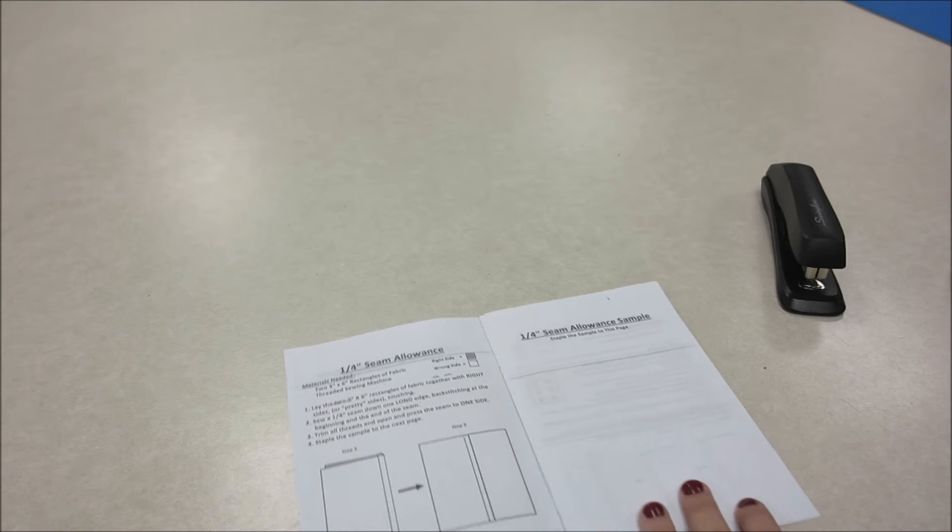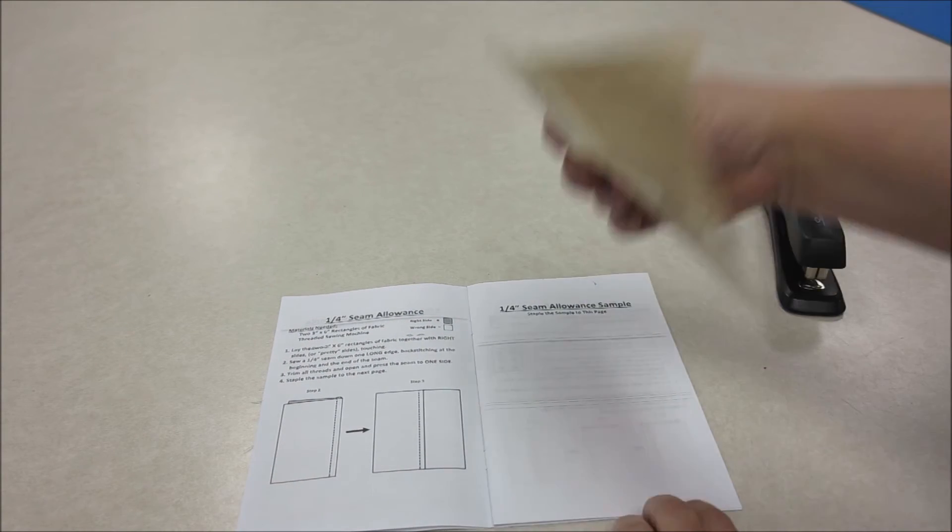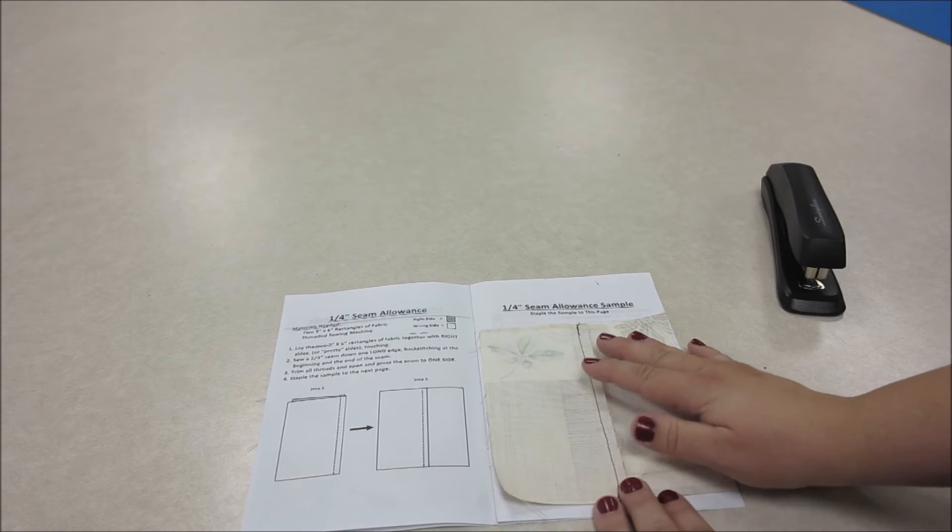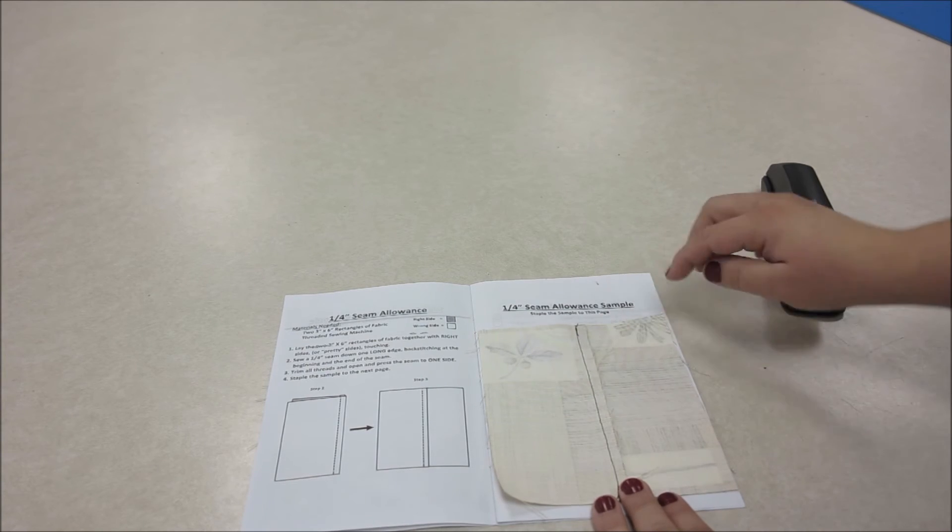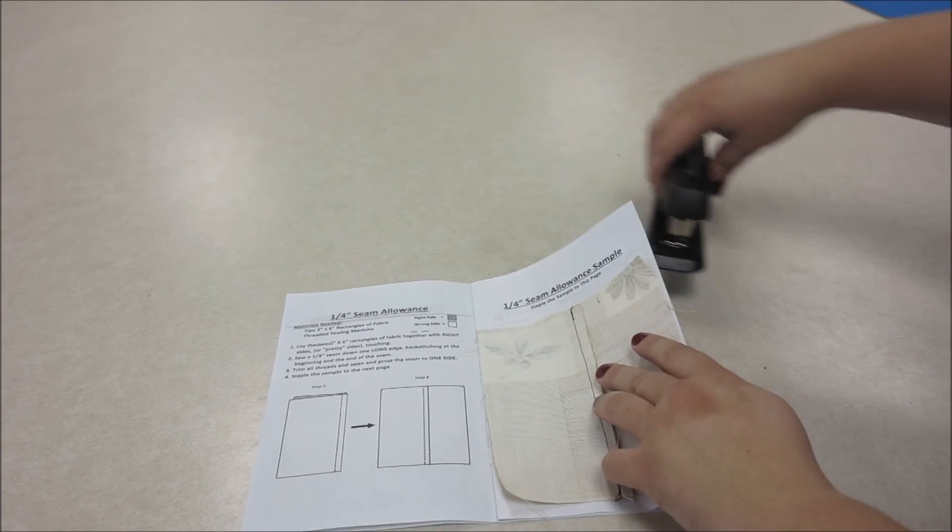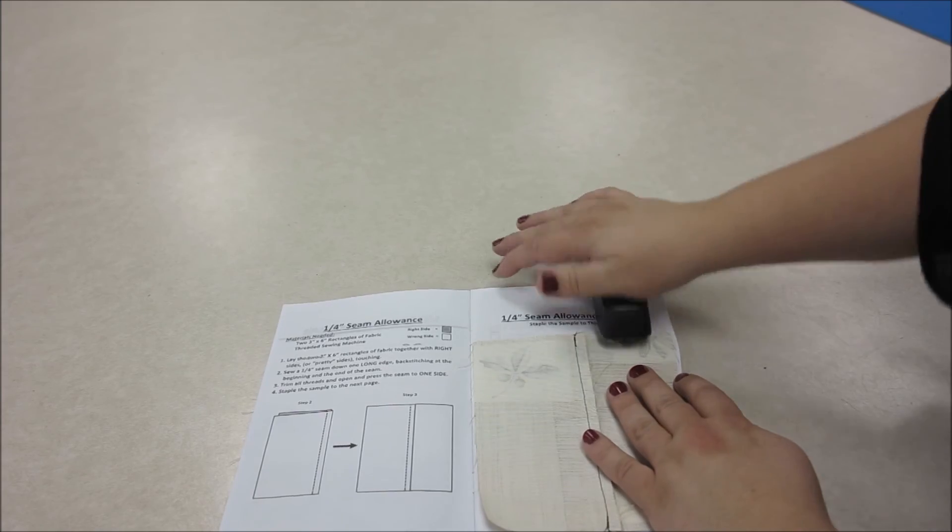Alright, when you staple in your 1/4 inch seam allowance, make sure that the wrong side is facing up and that your seam has been pressed to the side, and then we just staple the top.